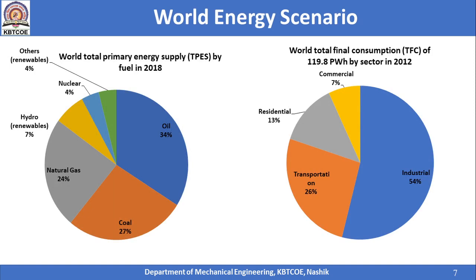You can see two pie charts. Focusing on the left-hand pie chart, it depicts the World Total Primary Energy Supply (TPES) by fuel for the year 2018. The contribution of various fuels is shown, and it can be observed that the highest contribution comes from oil at around 34 percent, followed by coal and natural gas. This means most of the world's energy is obtained first from oil, then coal, then natural gas.